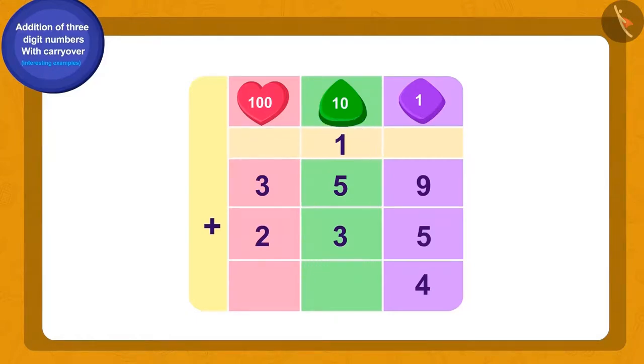Now, what is the total of the 10s place numbers? 1, 5 and 3. 9. Now, we will add the 100s place numbers. 3 and 2 and get 5.